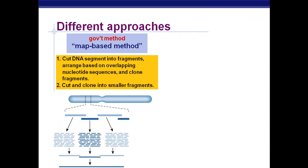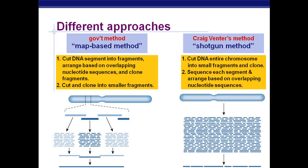With the government method, they used a map-based approach where the DNA would be cut into segments or fragments, arranged based on where they overlap, and then the fragments cloned — essentially sequencing individual segments of DNA at a time. Whereas Craig Venter's method was a shotgun method, where the entire chromosome would be cut into small fragments, cloned, each tiny segment sequenced, and then arranged based on how they overlap with their nucleotide sequences — more of a whole-chromosome application.